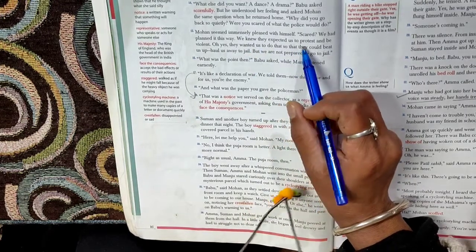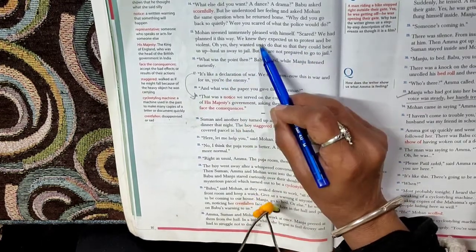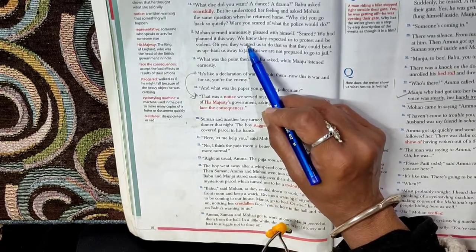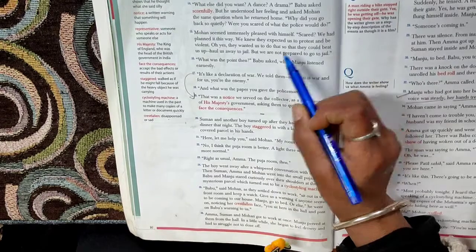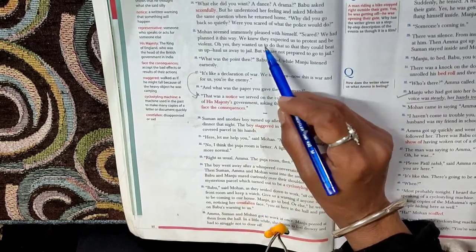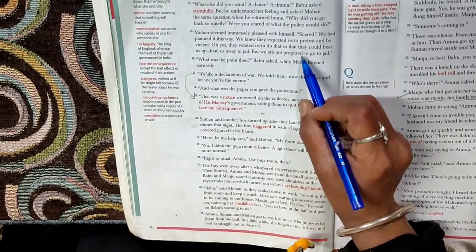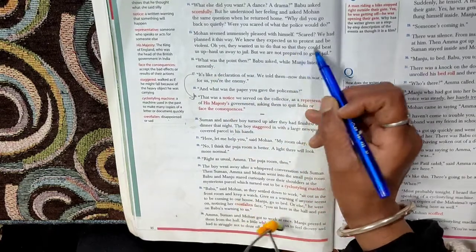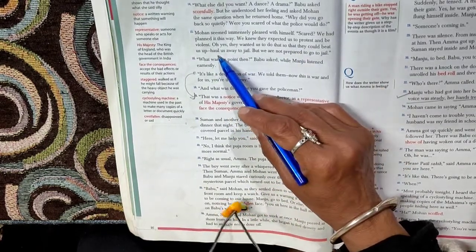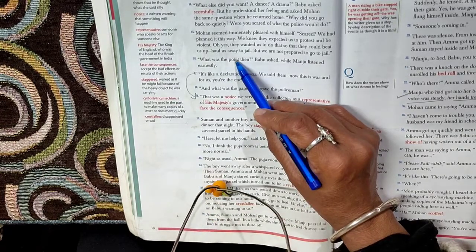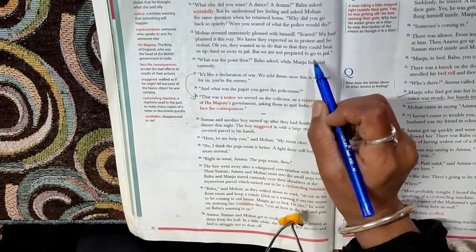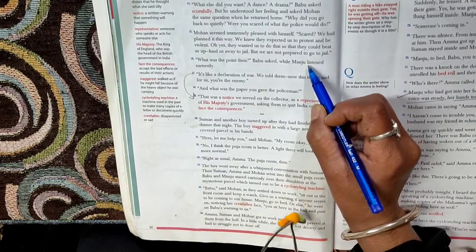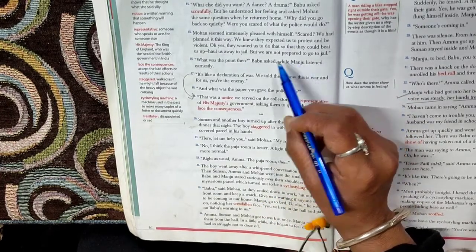We knew they expected us to protest and be violent. They here is the police. We is the college students. They say that the police expected us to protest and be violent. Oh yes, they wanted us to do that so they could beat us up. If we would have done that, they would have beaten us up and put us into jail. But we were not prepared to go to jail. That was not the motive of the procession. So we were quiet and peaceful.